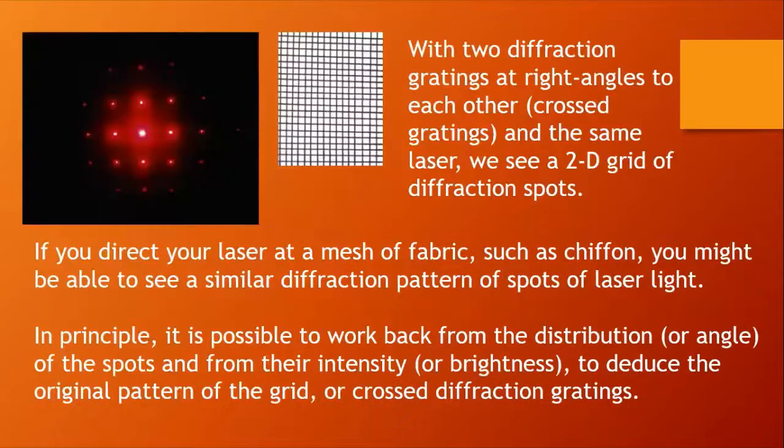And this leads us on to having two diffraction gratings at right angles to each other. It's what we call crossed diffraction gratings, and with the same laser we see a two-dimensional grid of diffraction spots. Incidentally, it's quite fun if you direct your laser carefully at a mesh of fabric such as chiffon, notice the pronunciation there, you might be able to see a similar diffraction pattern of spots of laser light. And in principle it's possible to work back from the distribution or angle of the spots and from their intensity or brightness to deduce the original pattern of the grid, crossed diffraction gratings.